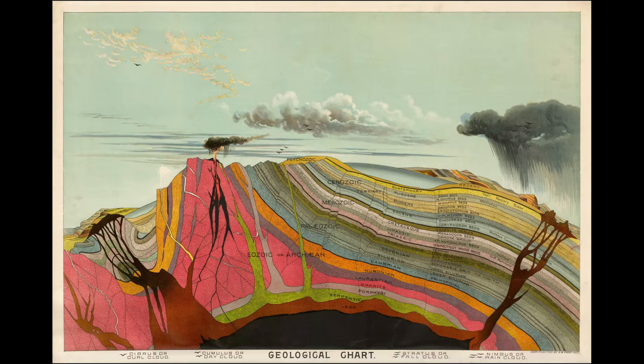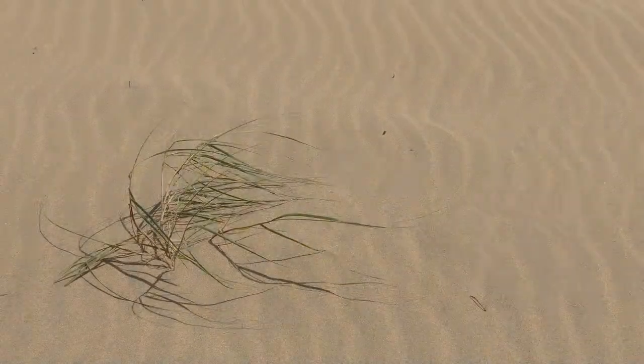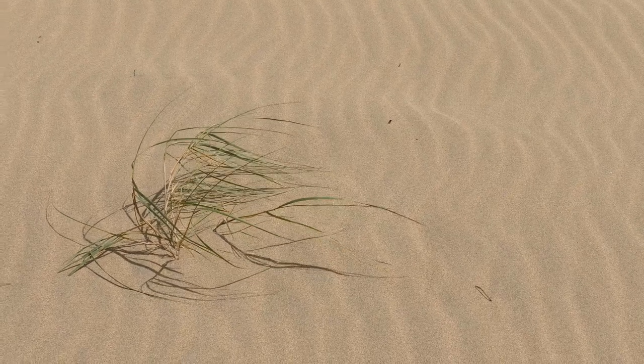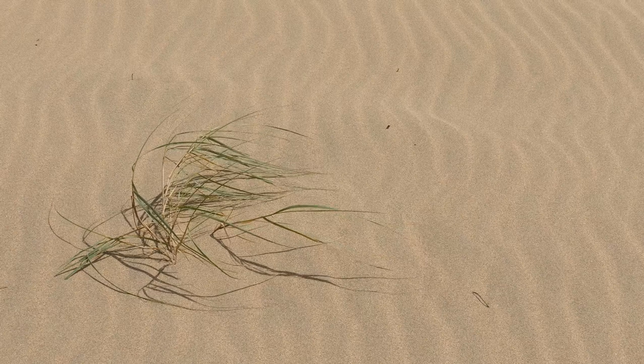At that time all the science branches were developing, and people started noticing that all the physics laws being discovered apply to the processes happening right now on a planet, and it means they were applied to our planet in the past. For example, if you see how ripples form in a riverbed today, similar processes should have been happening in the past.